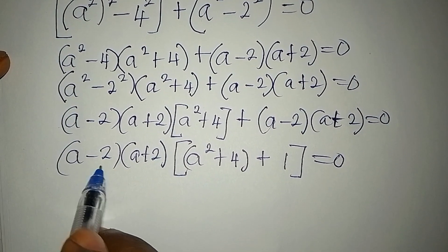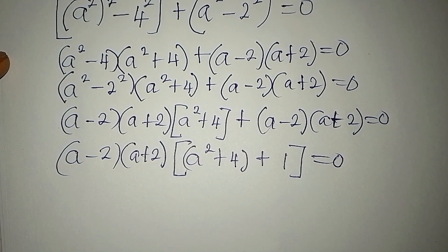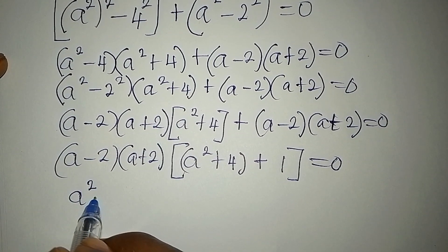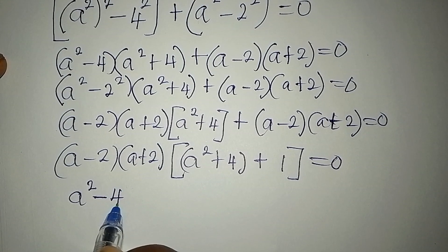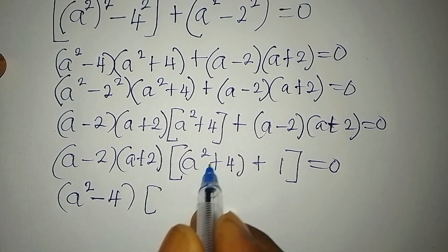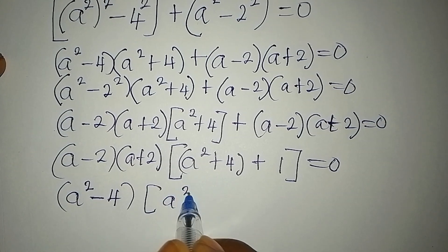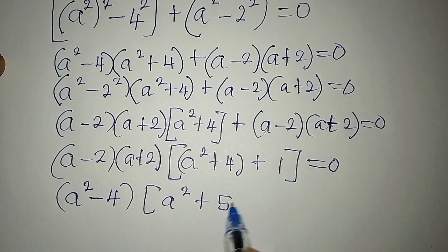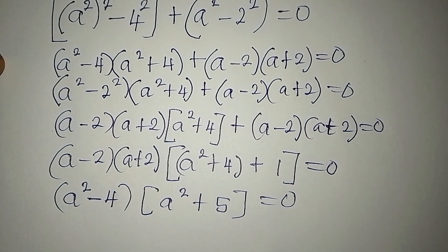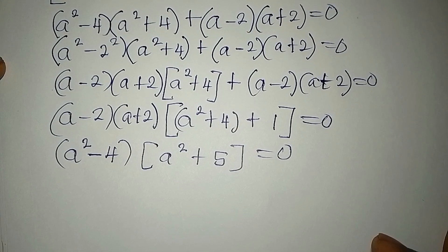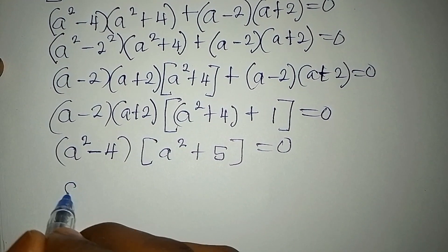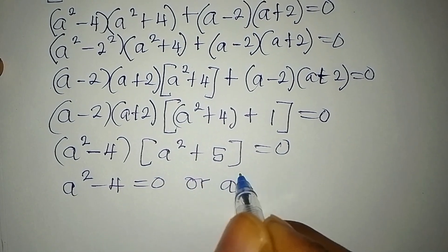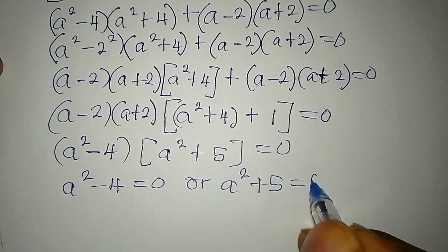If you have A minus 2 into A plus 2, it is a perfect square, so we can express this as A squared minus 4. That's our factor. Then here we're having A squared plus 5, because if you open the bracket you have 4 plus 1, which is 5. We equate this to 0. Now we apply the zero product property: it is either A squared minus 4 equals 0, or A squared plus 5 equals 0.